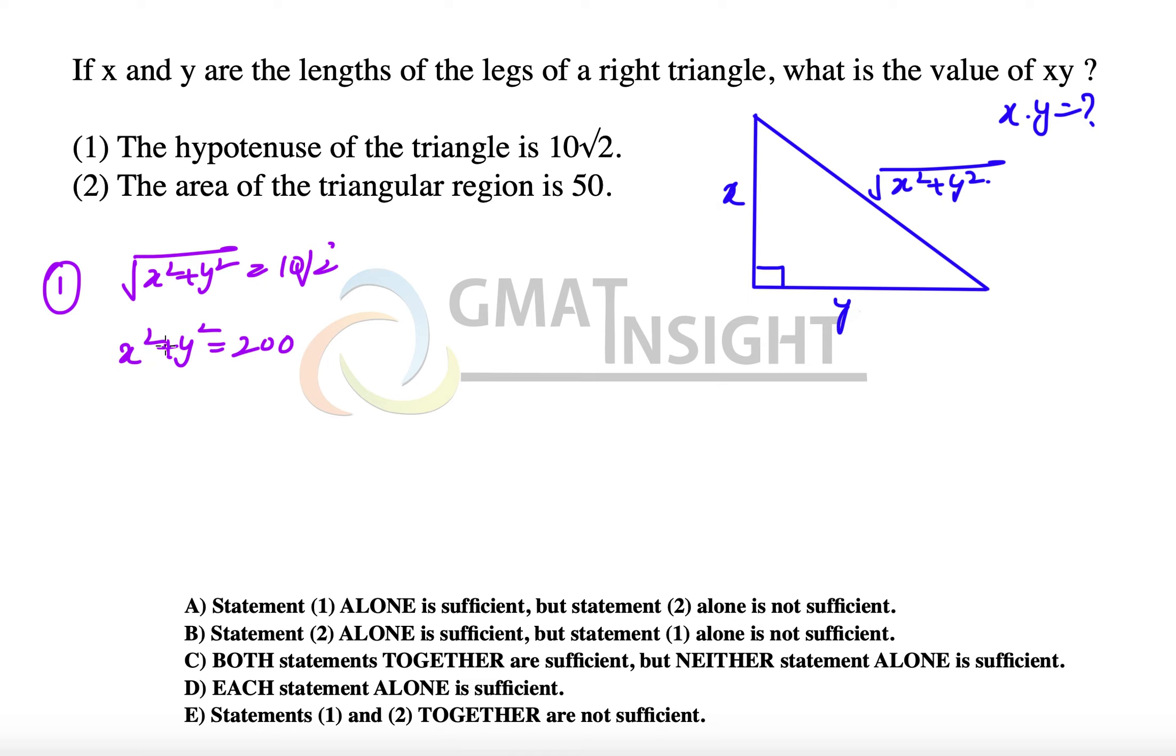But nowhere is it given that the sides are integers or anything, so there can be infinite possible solutions of x and y. We say that the first statement alone is not sufficient to answer the question, and we can eliminate options A and D.